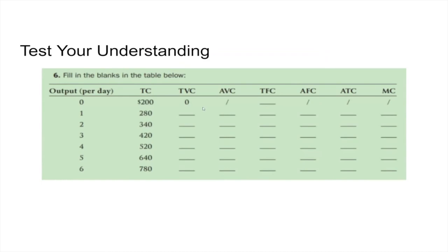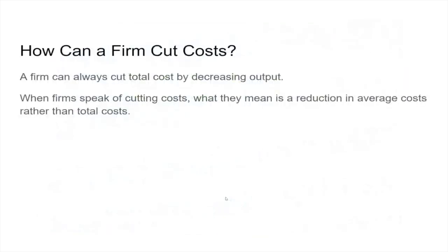That's the mechanics of this chapter. A key question is: how can a firm cut costs? When a firm speaks about cutting costs, it's really talking about cutting average costs, not total costs. Because if you think about a firm — the more it produces, obviously its total costs go up, since you have to pay for the contents in each extra widget. What we're really talking about in terms of cutting costs is getting average costs down.